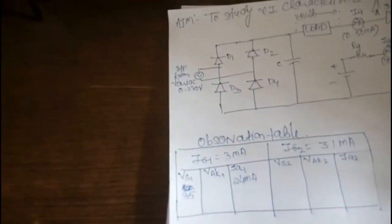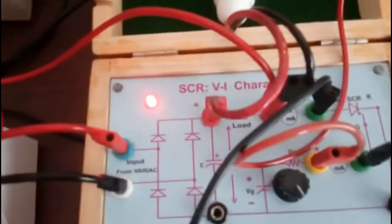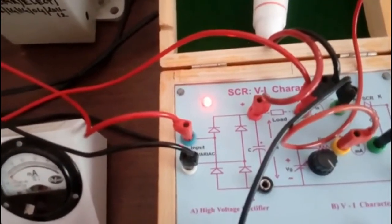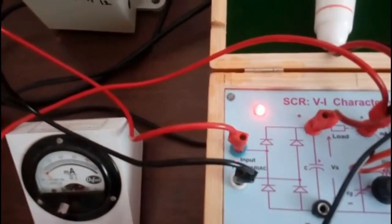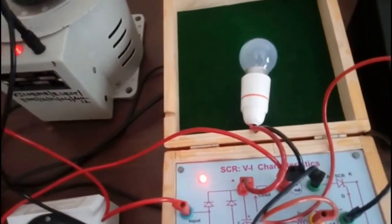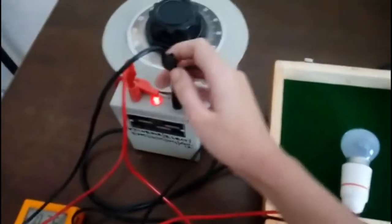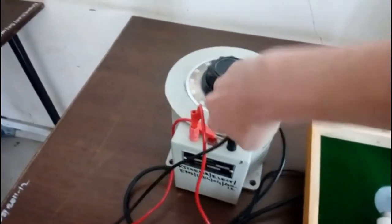There is one more column, see here it is VAK, that is anode to cathode voltage. Whenever your SCR goes into conduction, it works as good as a short circuit, means your voltage will come out to be round about zero. But ideally it is zero, practically it cannot be zero. So you can measure that value also. You just have to do some DC voltage. First switch off everything, then only you should touch your apparatus.